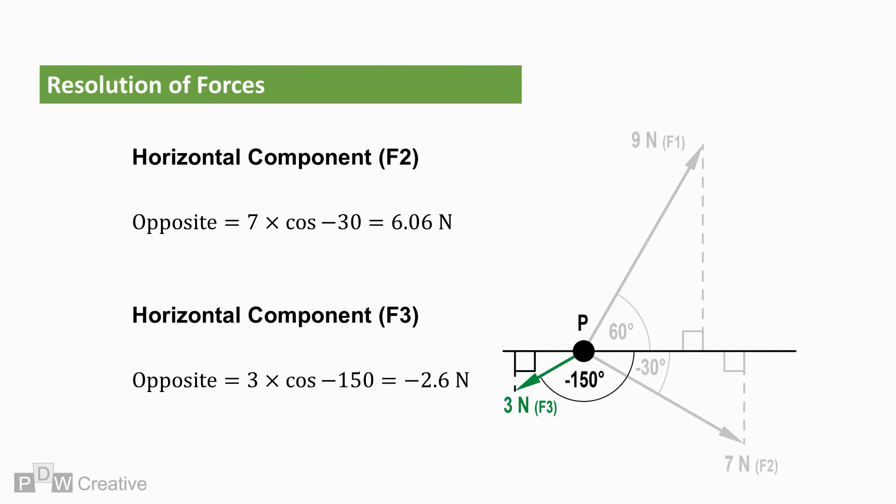The angle of action for F3 is also negative, but more importantly, it is greater than 90 degrees. As the force is acting to the left of the point, the horizontal component is negative 2.6 newtons.